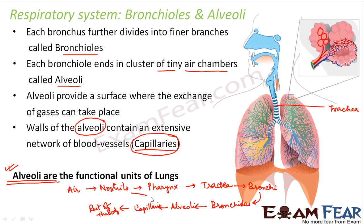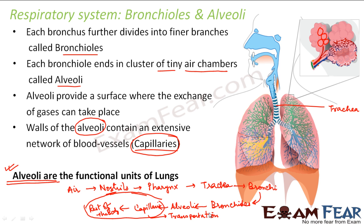How blood vessels transport gases to the rest of the body will be discussed in the transportation topic. Once oxygen reaches each cell, cellular respiration takes place — oxidation of food occurs, converting glucose into carbon dioxide, water, and energy. The carbon dioxide released follows the same path backwards: cells release CO2 into the blood vessels, capillaries bring it back to the alveoli, and from alveoli it travels through bronchioles, bronchi, and out the same pathway. This is how oxygen is taken in and carbon dioxide is given out.